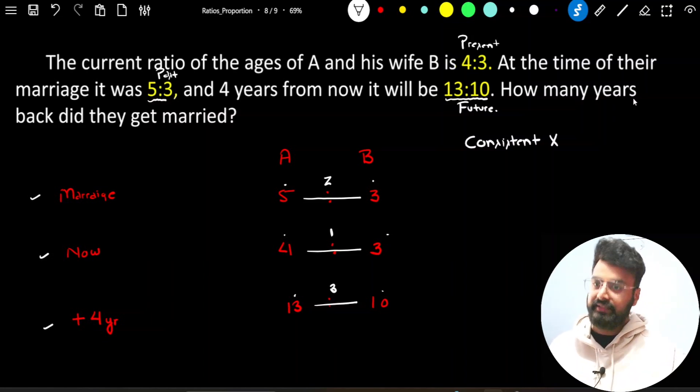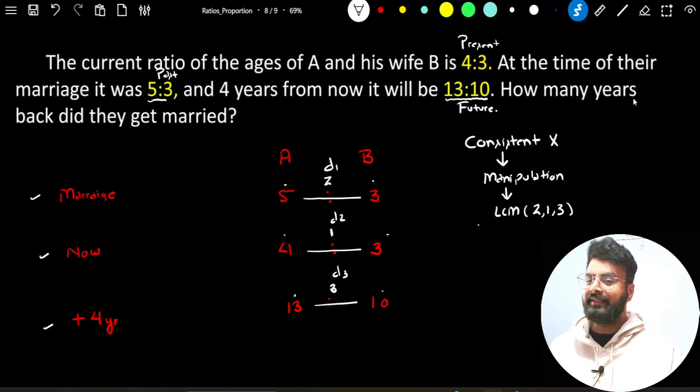To make it consistent, I have to perform some manipulation. The goal of the manipulation is that we have to make the differences D1, D2 and D3 in ages the same. And to do that, I will take LCM of these 3 differences: 2, 1 and 3. The LCM of 2, 1 and 3 is 6. It means in order to make these differences same, I have to make the difference 6.